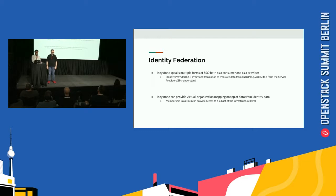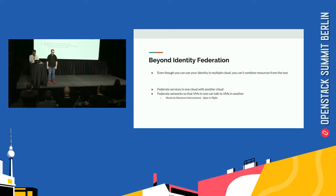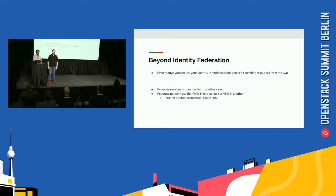But what if you want to share something else besides the identity? What if you want to share resources — like have a VM in one cloud connect to a volume in another cloud, or have a VM in one cloud be able to boot from an image in another cloud? You need a deeper level of integration between the two clouds to accomplish that, to be able to combine resources in this seamless way.